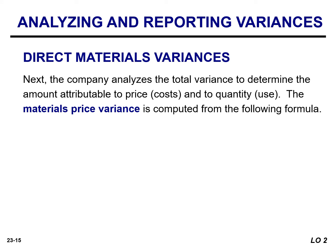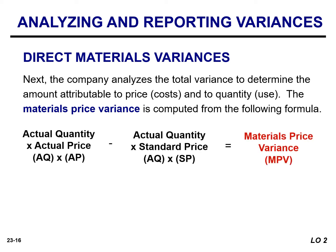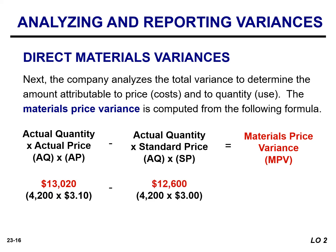The materials price variance results from a difference between the actual price and the standard price. It is calculated as the difference between the actual amount paid — actual quantity times actual price — and the standard amount that should have been paid for the material used — actual quantity times the standard price. The material price variance is $420, and that is unfavorable because actual costs exceed standard cost.